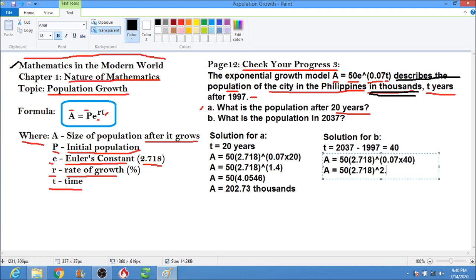So we have A equals 50 times 2.718 to the power of 2.8, and that will be 16.4446 times 50, so we have 822.23 thousand.